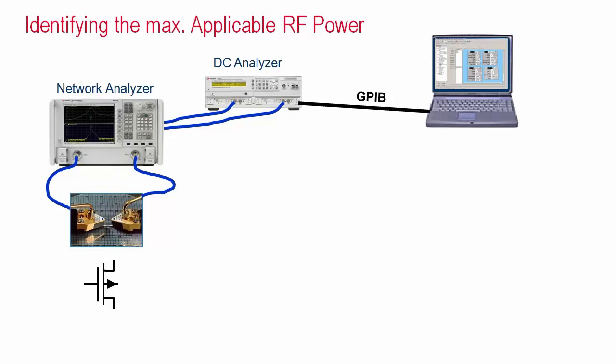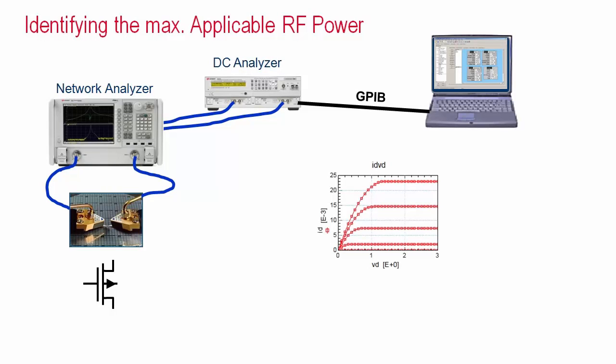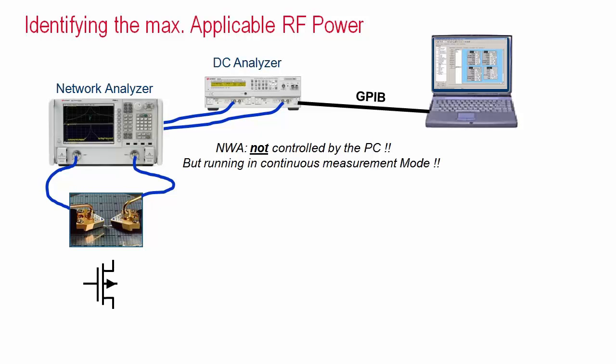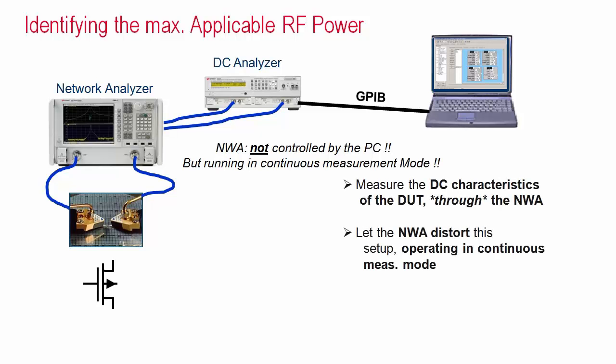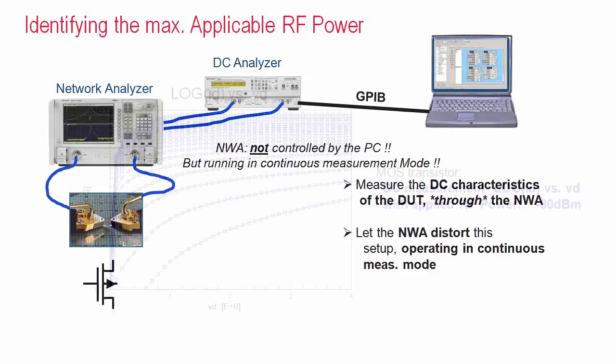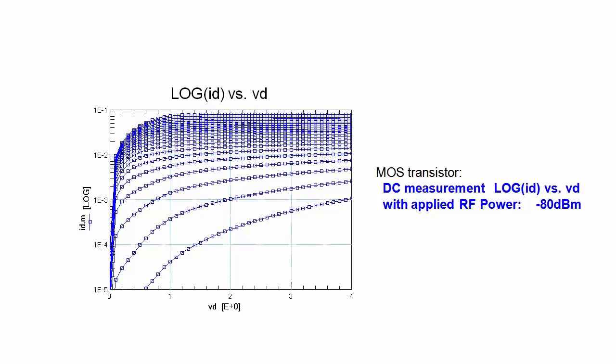A best practice method to identify the correct RF test signal is to use the device under test itself as a spectral sensor. We measure the DC output characteristic of the transistor, IDVD, through the network analyzer, which is operating in continuous trigger mode and is not controlled by the test software of the computer. It is simply acting like a distortion source. We first set the network analyzer's RF signal power manually to the lowest possible value, for example minus 80 dBm. The DC output curve obtained this way and displayed semi-logarithmically serves as a reference.